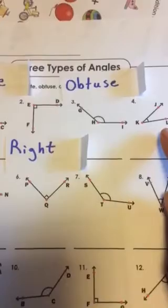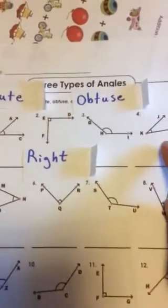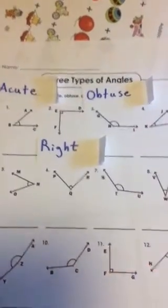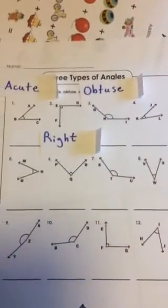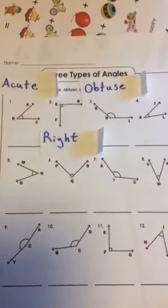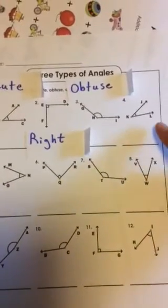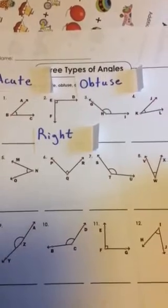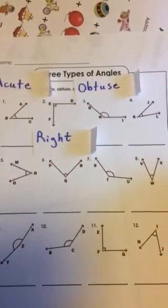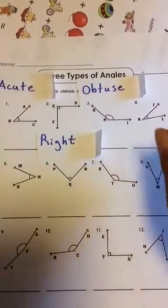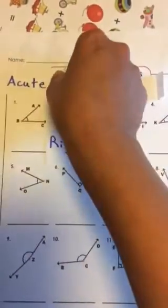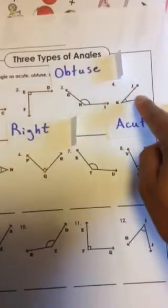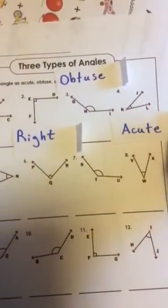Okay, look at number four. Pull back a little bit so you can see them all together. I'll give you a couple seconds to think about it. What kind of angle is it? If you guessed acute, good job. Number four is also a cute little angle.